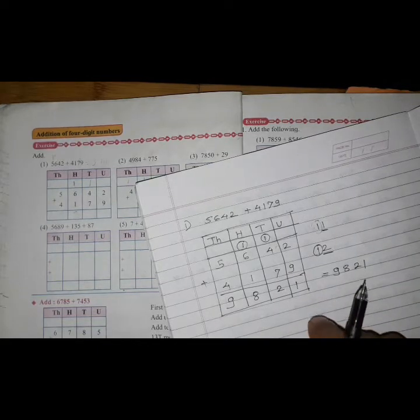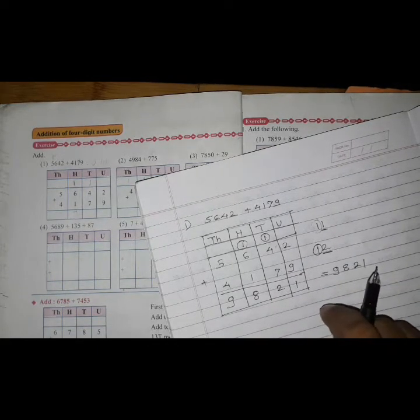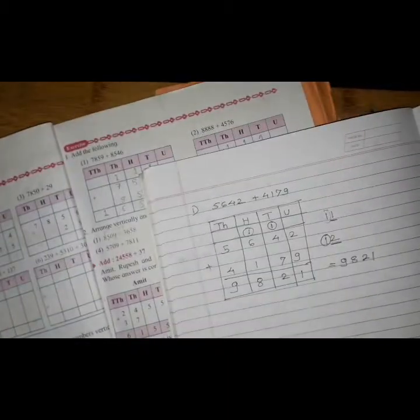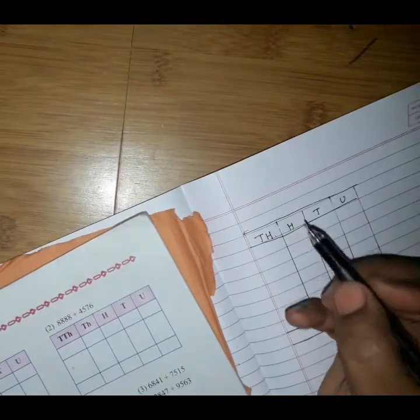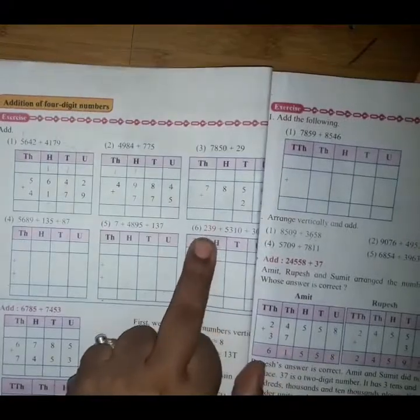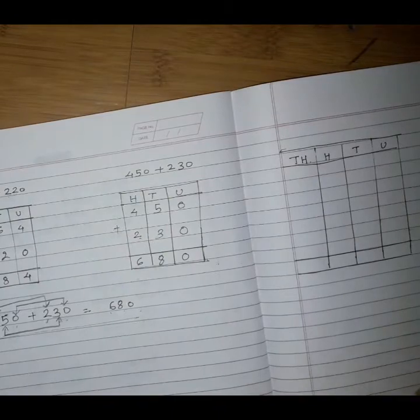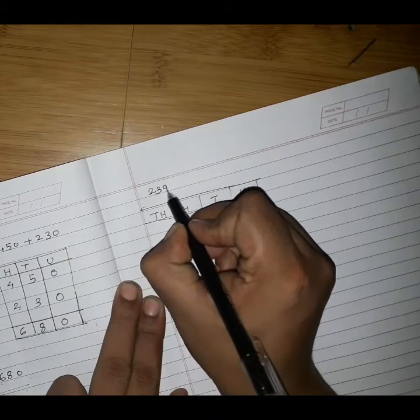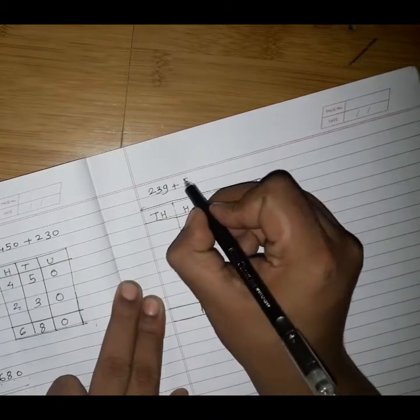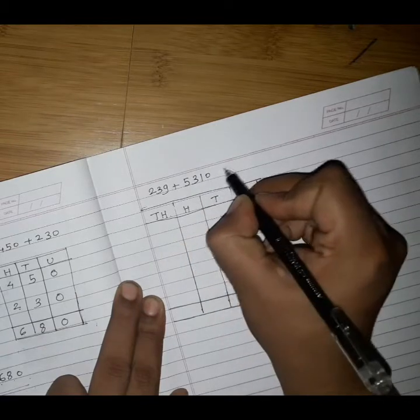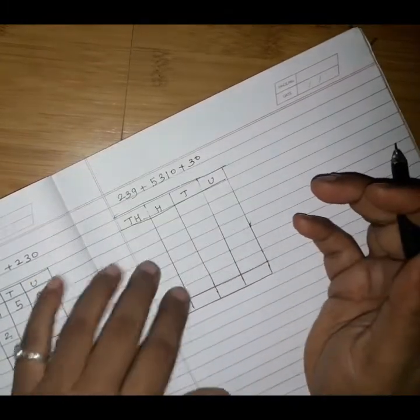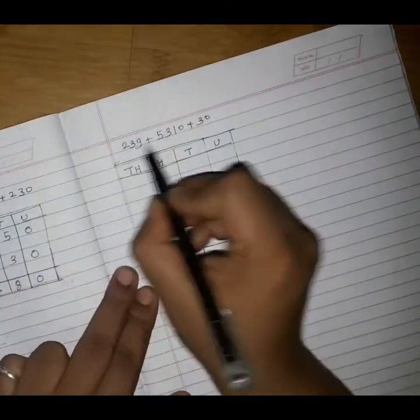Understood? Let's take another example. The example number 6 on page number 20. The example is 239 plus 5310 plus 30. Now you have to fill this column and arrange these 3 numbers.